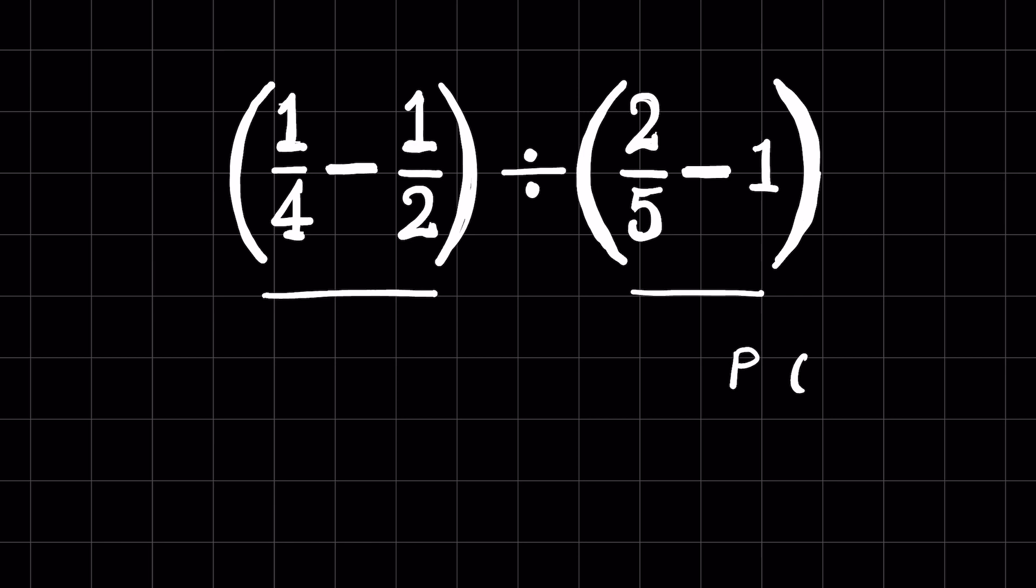Parenthesis is of three kinds: this is the smaller bracket, this one is the curly bracket, and this is the box bracket. First we solve smaller bracket, then the curly or middle bracket, and the box bracket or bigger bracket at last. Since both parentheses are smaller parentheses and they are separated by a division, we can solve them simultaneously.